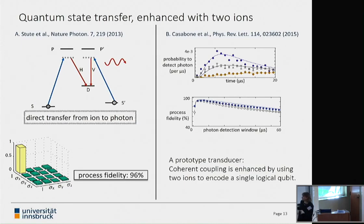Here we went from one ion to two ions and we encoded the state in two ions instead of one. That boosted this coherent coupling rate by this factor of the square root of 2 that I told you about earlier in this ion crystal transducer paper. We saw process fidelity slightly increased in exactly the way we would expect compared with numerical simulations from this enhanced coherent coupling rate.